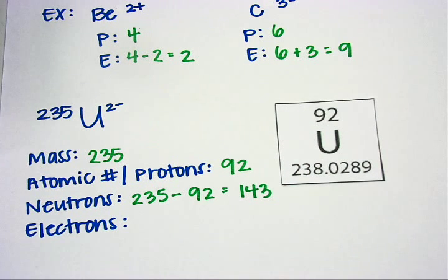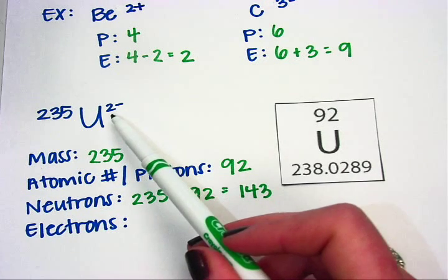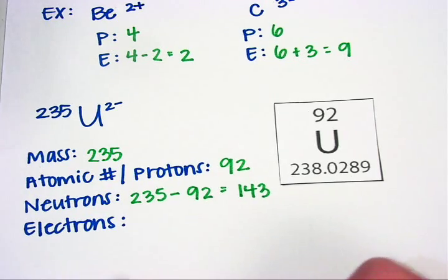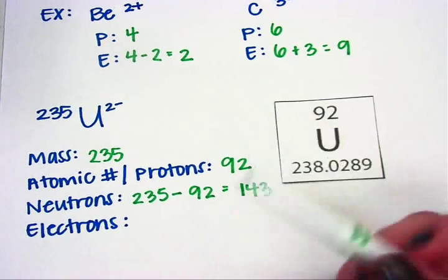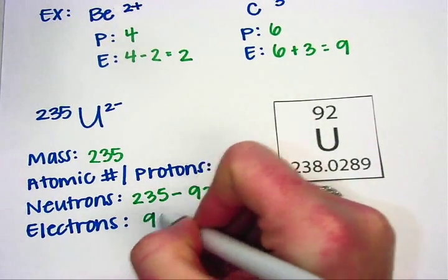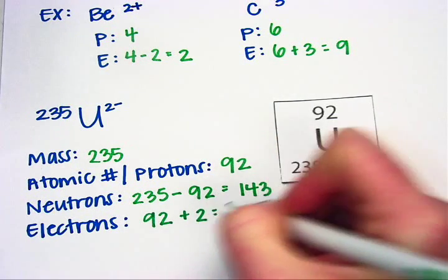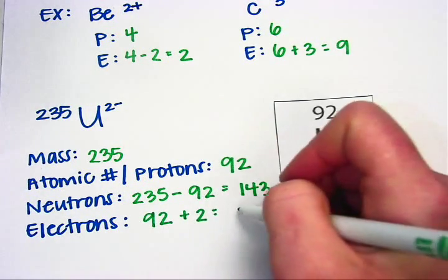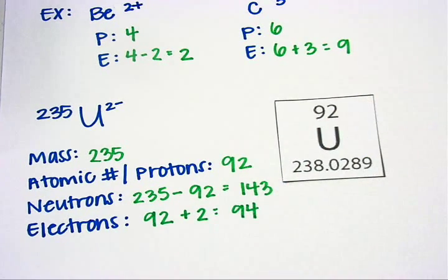The last thing I want to figure out is the number of electrons. Looking up here, this charge is -2, which means I have 2 extra electrons. So 92, and I'm going to be adding to get some more. 92 plus 2 is 94 electrons.